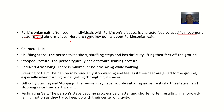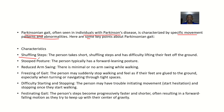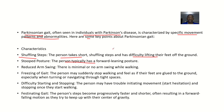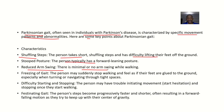Looking at the key characteristics: the person walks with short shuffling steps and has difficulty lifting their foot off the ground. There is stooped posture — the person typically leans forward. There is also reduced arm swinging — minimal or even no arm swinging while walking, whereas normally you swing your arms when you walk.